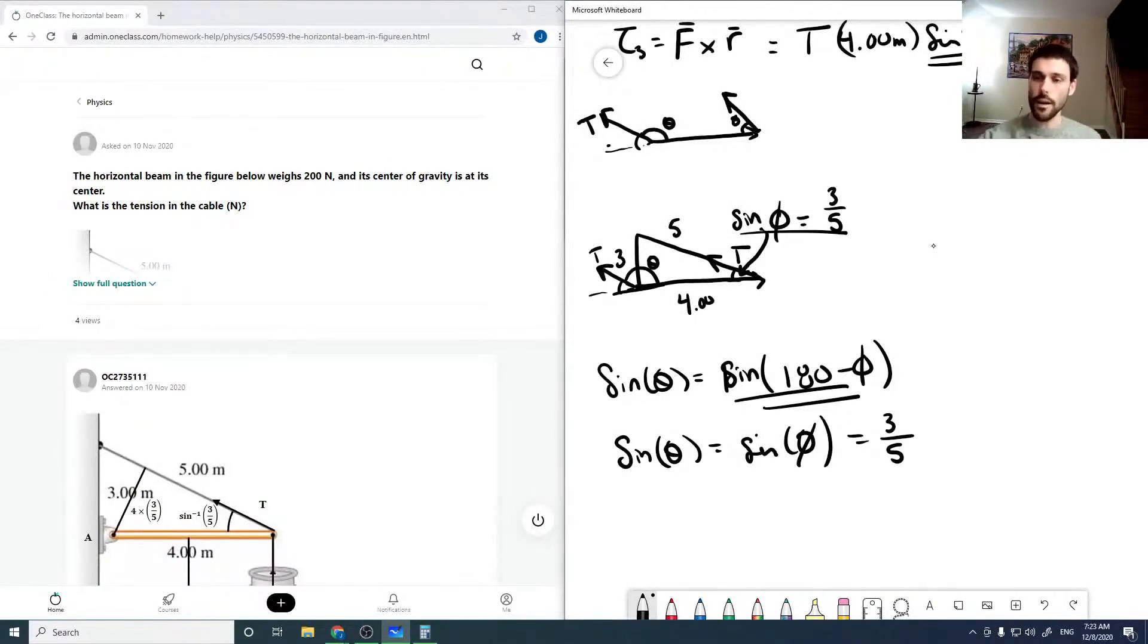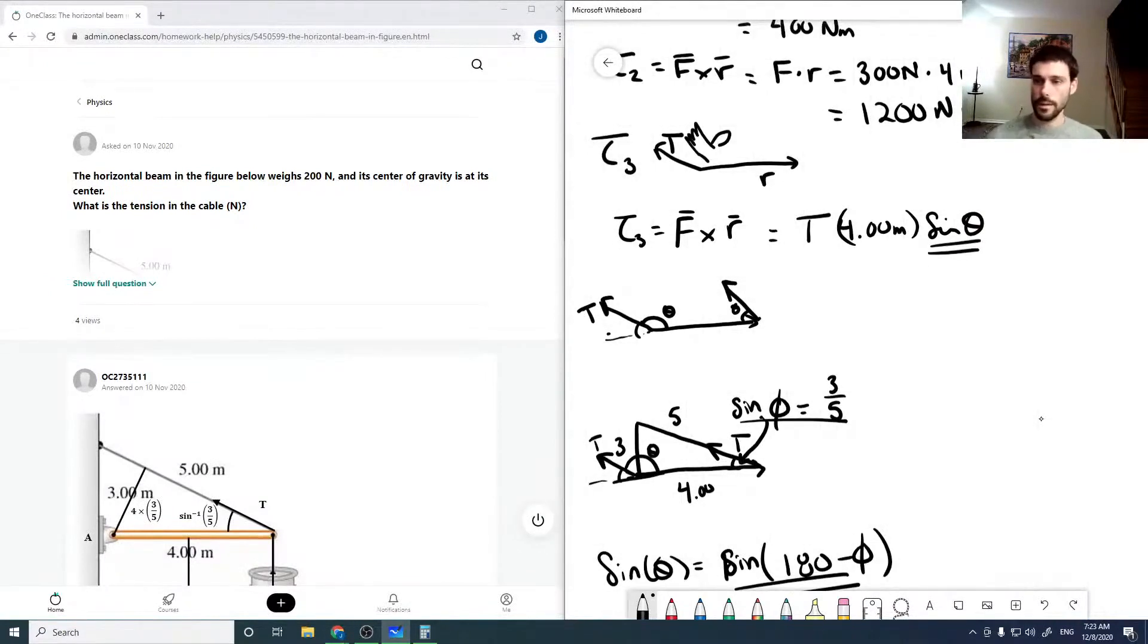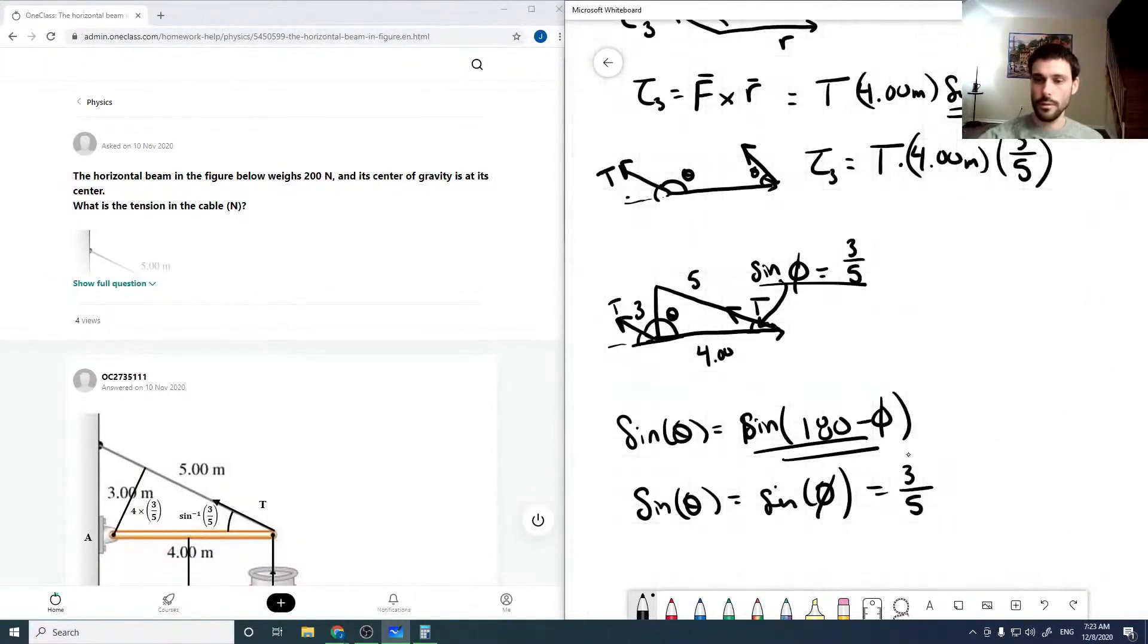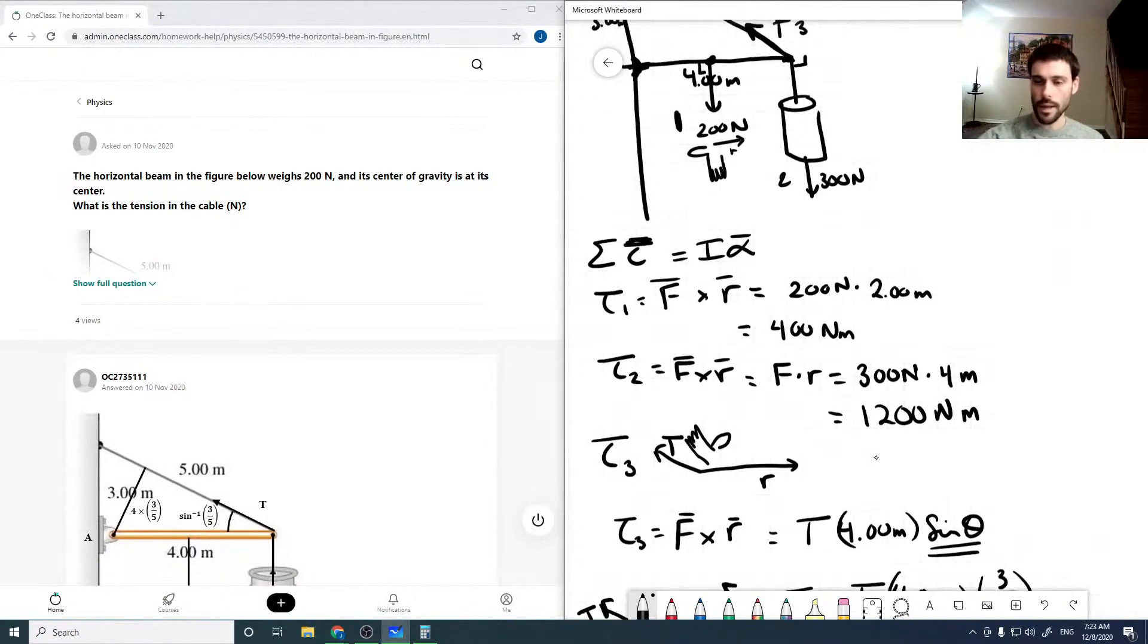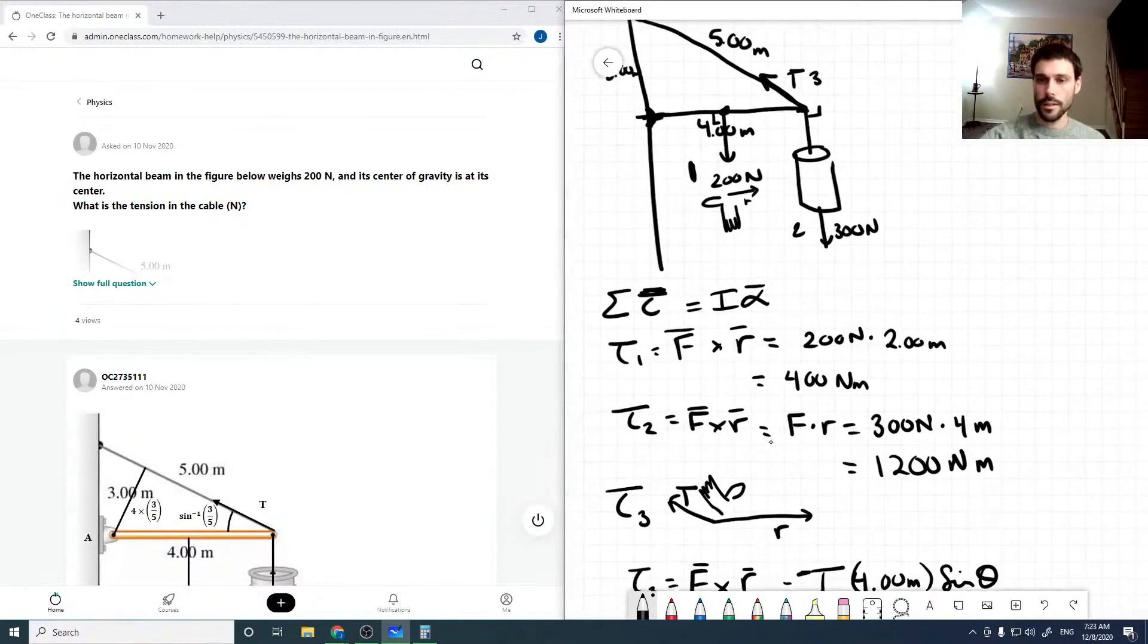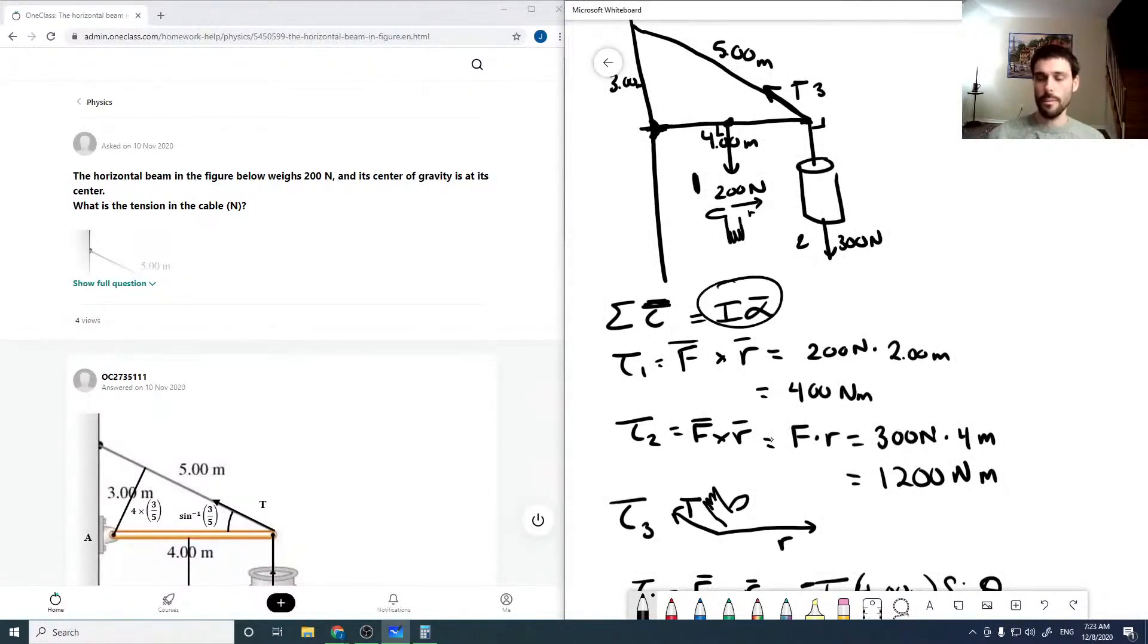That simplifies our torque three quite a lot. Torque three is just the tension times four meters times three over five. This is negative. Now the sum of our torques equals I alpha, but nothing's moving, so that equals zero. The sum of our torques will be zero.